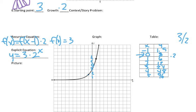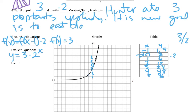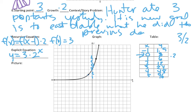We already got the graph. So, then, the story problem, we're starting something that starts at three and doubles. So, Hunter eats three Pop-Tarts. We'll say yesterday. So, not eats, ate. His new goal is to eat double what he did the previous day.